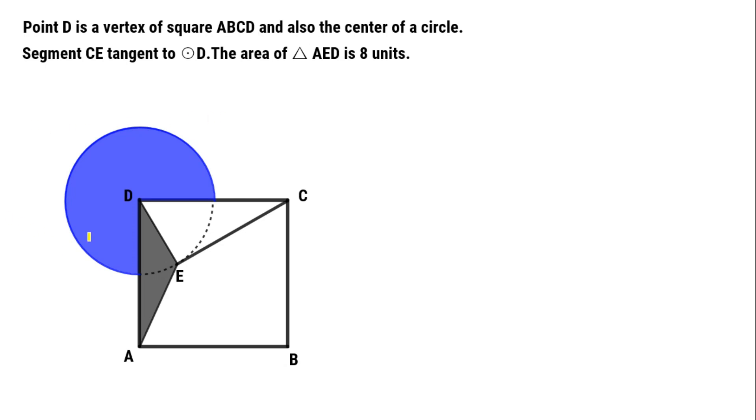Point D is a vertex of square ABCD and is also the center point of a circle. Through point C, make a tangent segment CE to circle D. Form triangle AED. The area of triangle AED is 8 units.